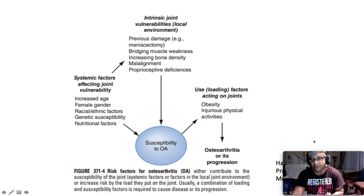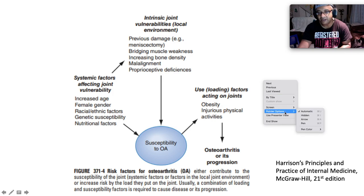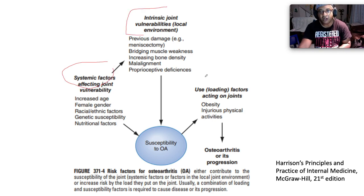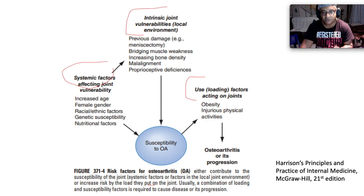This is a diagram from Harrison's demonstrating risk factors for osteoarthritis. We can stratify these into systemic factors, intrinsic joint factors, and loading factors. These factors either contribute to susceptibility of the joint or increase risk by the load they impose on the joint. Usually a combination of loading and susceptibility factors are required to cause or progress osteoarthritis.